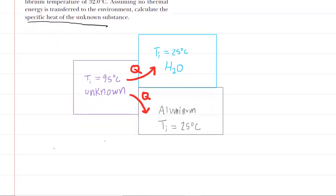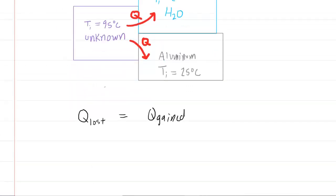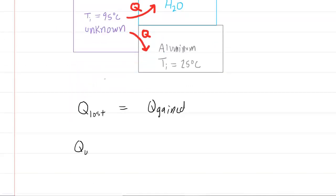And there's a bit of a conservation of energy going on here. We would say that the amount of heat that is lost by the unknown is going to need to equal the amount of heat that is gained by the water and aluminum. We can write this out in a longer fashion: the heat of the unknown equals the heat gained by the water and the heat gained by the aluminum.